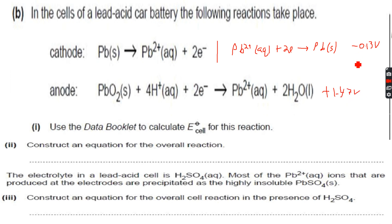Since -0.13 is less than +1.47, we invert this equation, so it becomes +0.13. Then we add the two together: +0.13 plus 1.47 gives +1.60 volts.